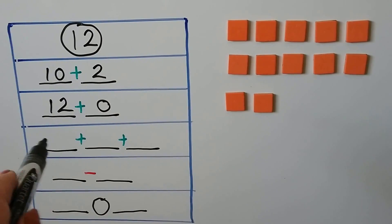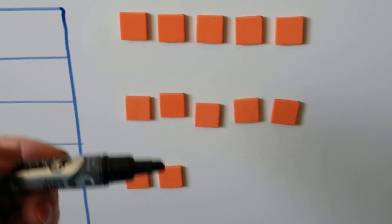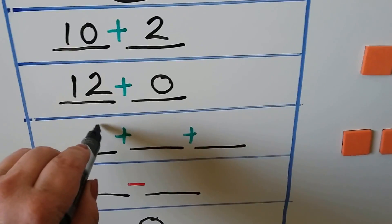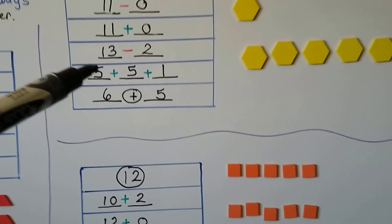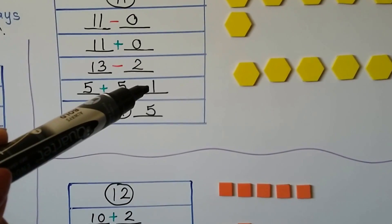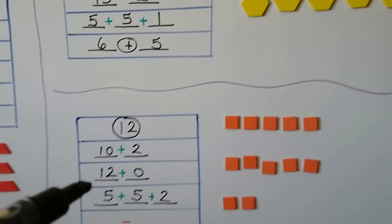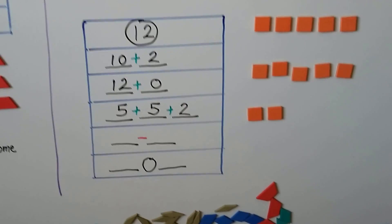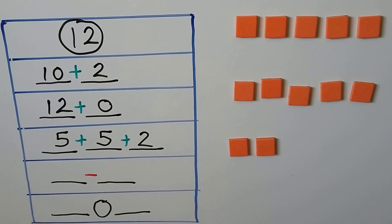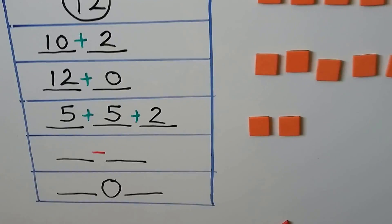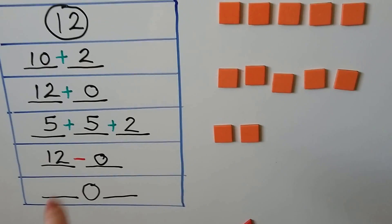Can we split the counters up so we have three addends? We could do 5 plus 5 plus 2. Notice that for 11 we did 5 plus 5 plus 1, and because 12 is 1 more than 11, now we have 5 plus 5 plus 2. Now we need to think of a subtraction sentence that would make 12 — we could do 12 minus 0. Now we need to think of one of our own.